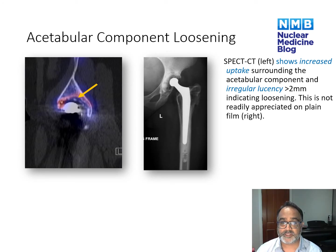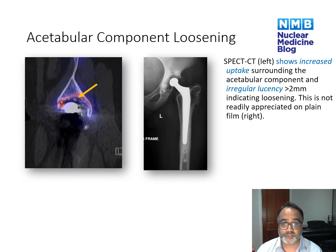Acetabular component loosening is much harder to assess on the planar bone scan. On the SPECT CT, you can see lucency around the acetabular component that is greater than two millimeters, irregular, with associated increased uptake. On plain film, this type of loosening is very difficult to evaluate and is not specific.